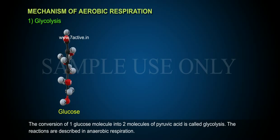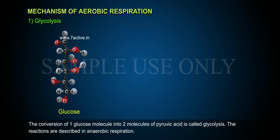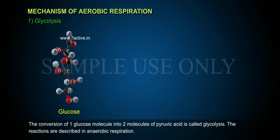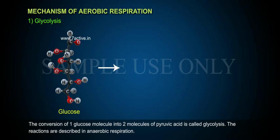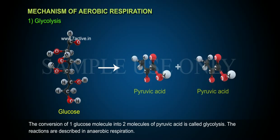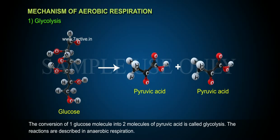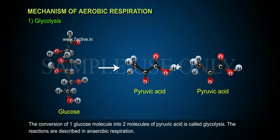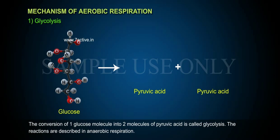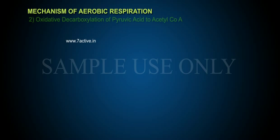Step 1: Glycolysis. The conversion of one glucose molecule into two molecules of pyruvic acid is called glycolysis. The reactions are described in anaerobic respiration.